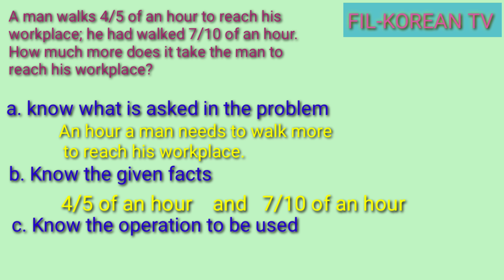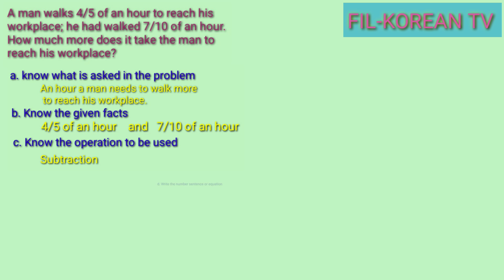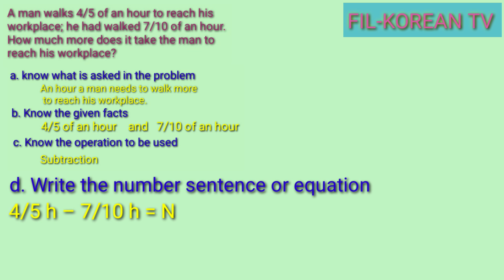The clue word 'how much more' tells us to use subtraction. Now that you know the operation, write a number sentence as your guide in solving the problem. The number sentence or equation for this problem is: four fifths minus seven tenths equals n.